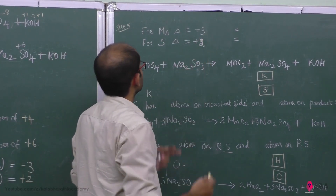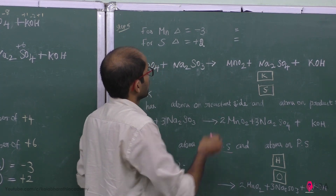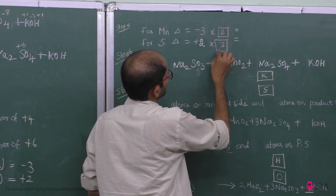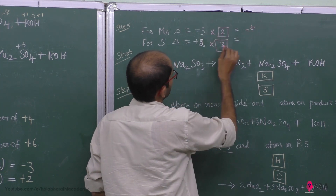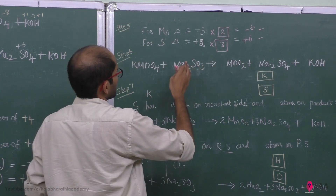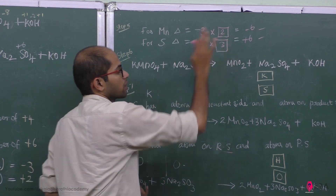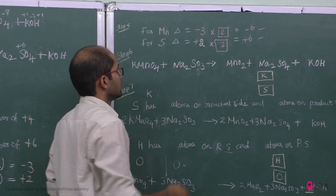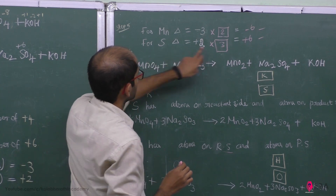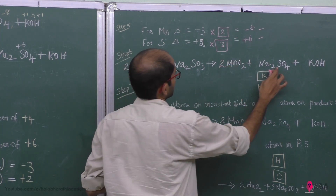Step 5: total increase must equal total decrease, so apply appropriate factors. We multiply by factors of 2 and 3: 3 into minus 3 equals minus 6, and 2 into plus 3 gives plus 6 — these are neutralized. So manganese gets a factor of 2 and sulfur gets a factor of 3. This makes the total change equal.